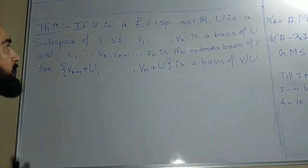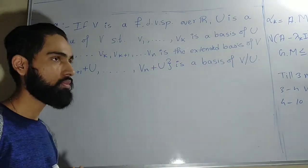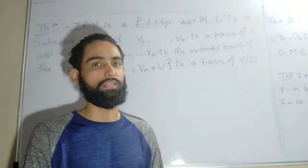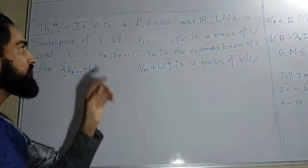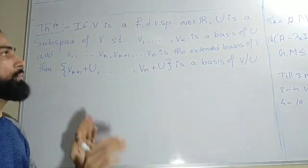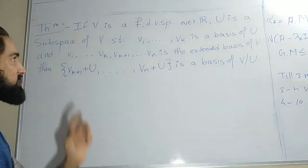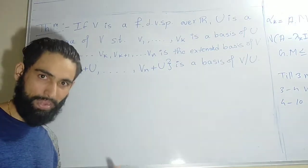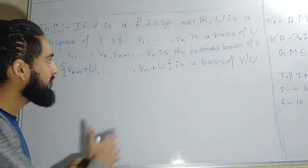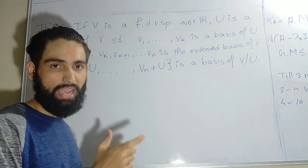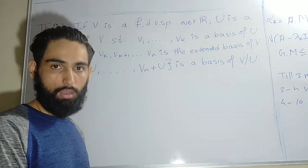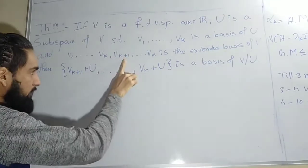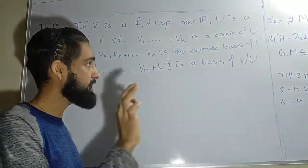Let's read this theorem. If V is a finite dimensional vector space — we work only on finite dimensional vector spaces at undergraduate level — over R, and U is a subspace of V, then since V is finite dimensional, U is also finite dimensional. Let v1 through vk be the basis of U. By using these k elements we can form v1, ..., vk, vk+1, ..., vn as an extended basis of V.